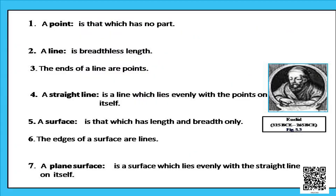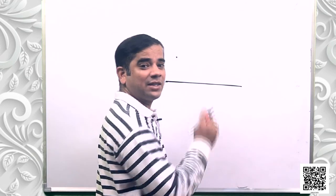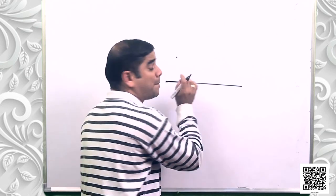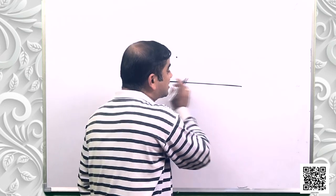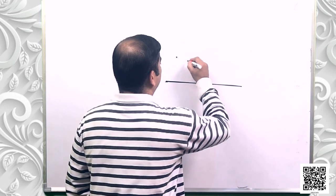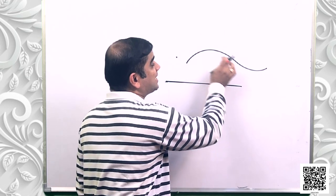Euclid began his exposition by listing 23 definitions in Book One of the Elements. A few of them are given in your book. The first definition says that a point is that which has no part. The second definition says a line is breadthless length — it has only length and no breadth, because it is constructed with a combination of multiple points placed together one by one.